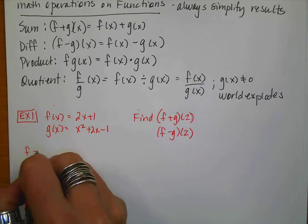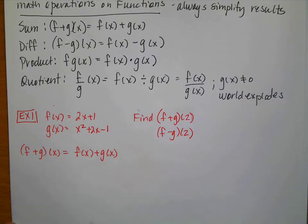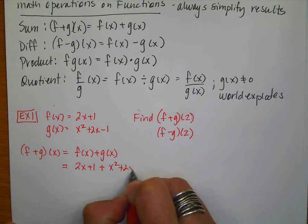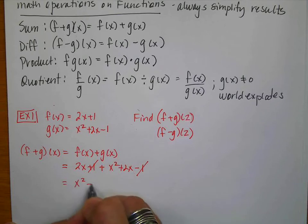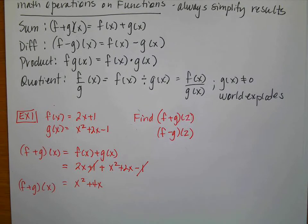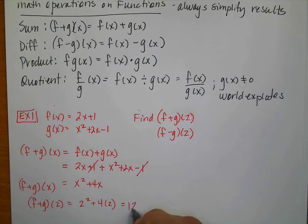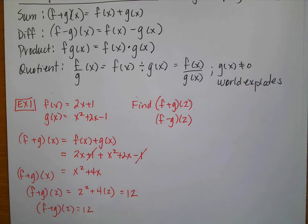Let's do (f + g)(x) first. (f + g)(x) equals f(x) plus g(x), so that's (2x + 1) + (x² + 2x − 1). When I simplify, the ones cancel and this gives x² + 4x. Then to evaluate at 2: (f + g)(2) = 2² + 4·2 = 12. So (f + g)(2) = 12.